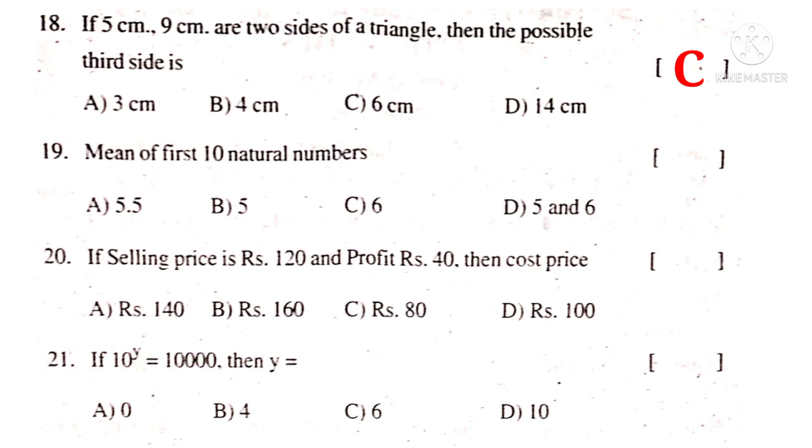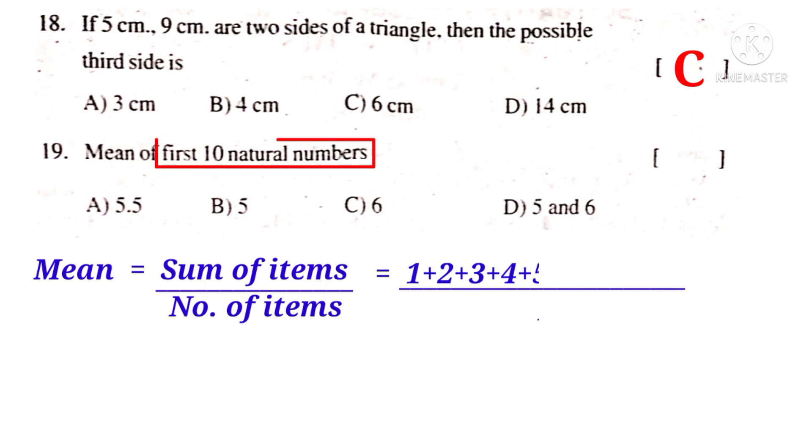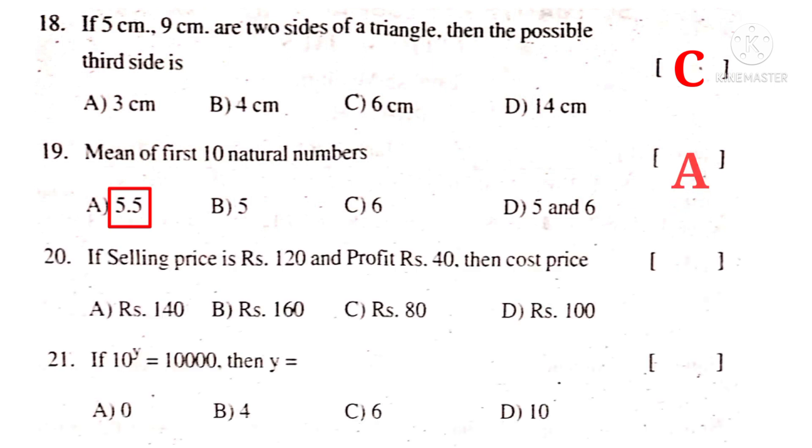19th. Mean of first 10 natural numbers. Mean is equal to sum of items by number of items. Here, first 10 natural numbers means 1 plus 2 plus 3 plus 4 plus 5 plus 6 plus 7 plus 8 plus 9 plus 10 by 10, which is equal to 55 by 10, that is equal to 5.5. So the correct choice is A.